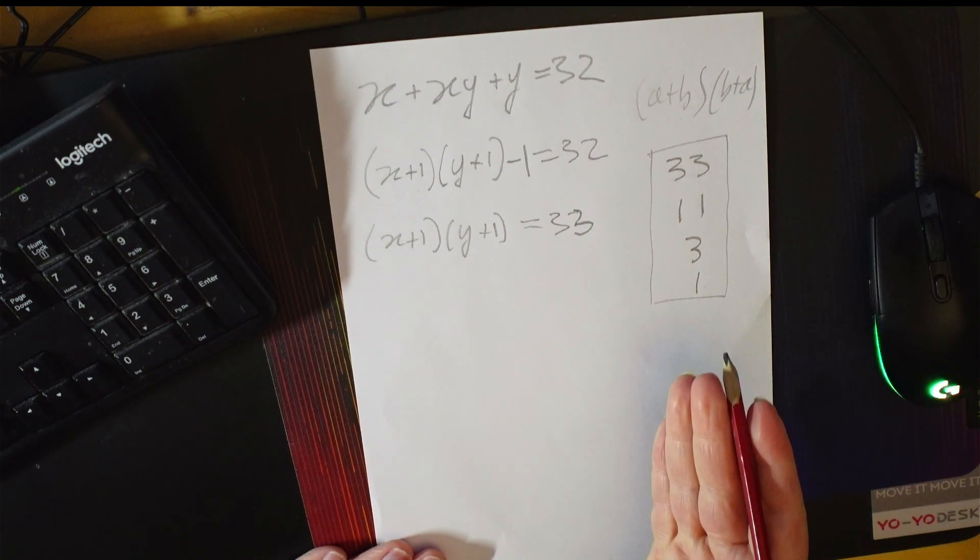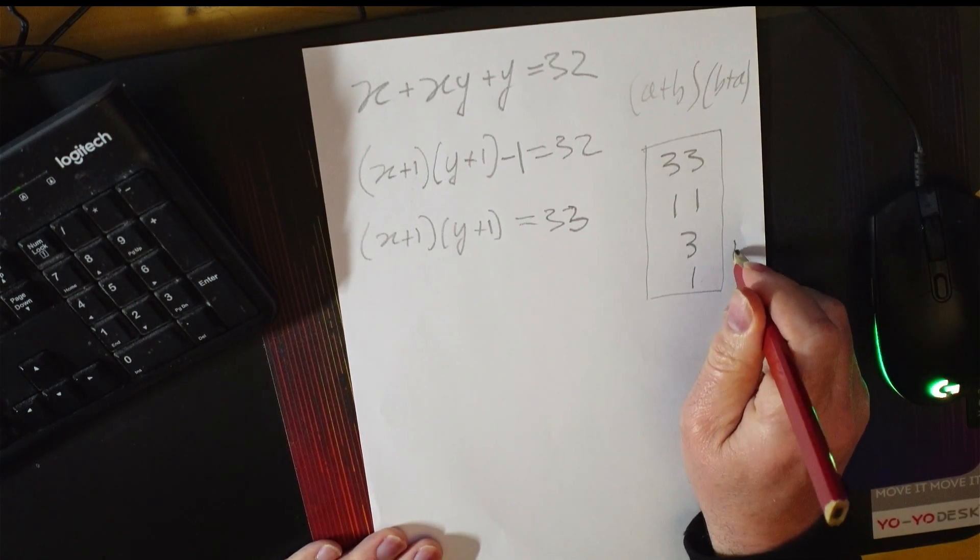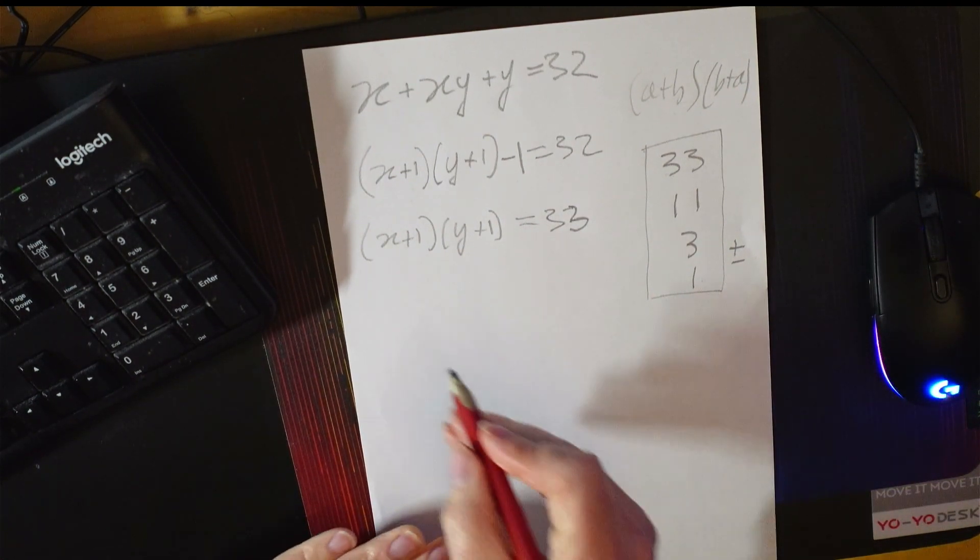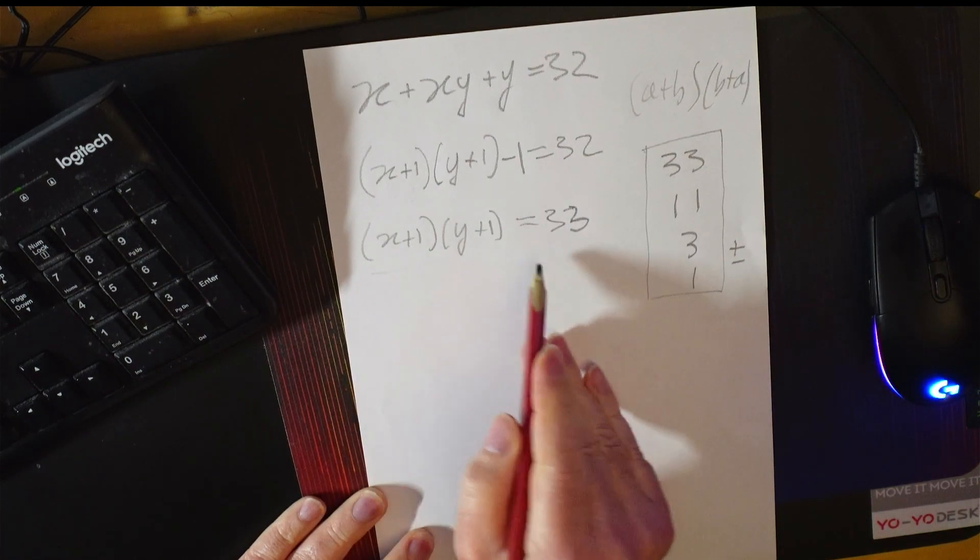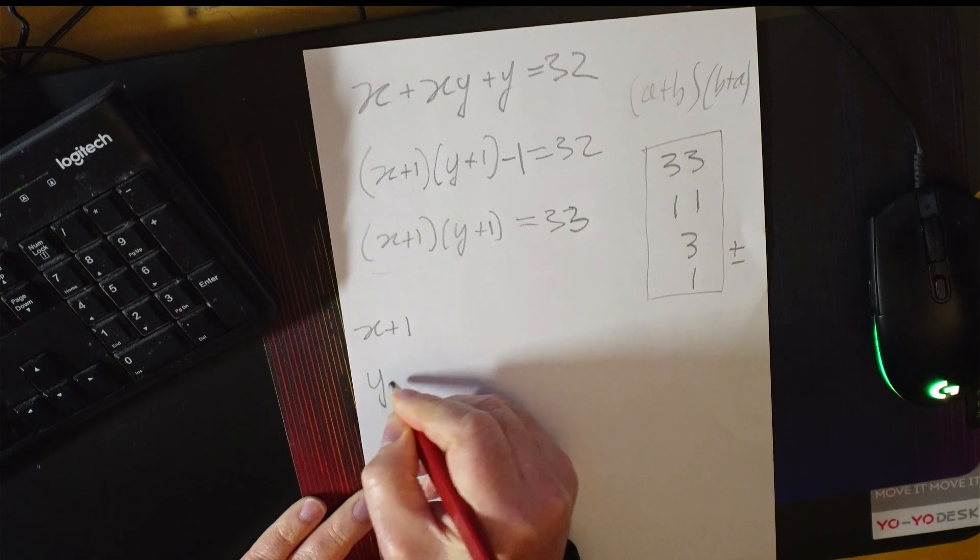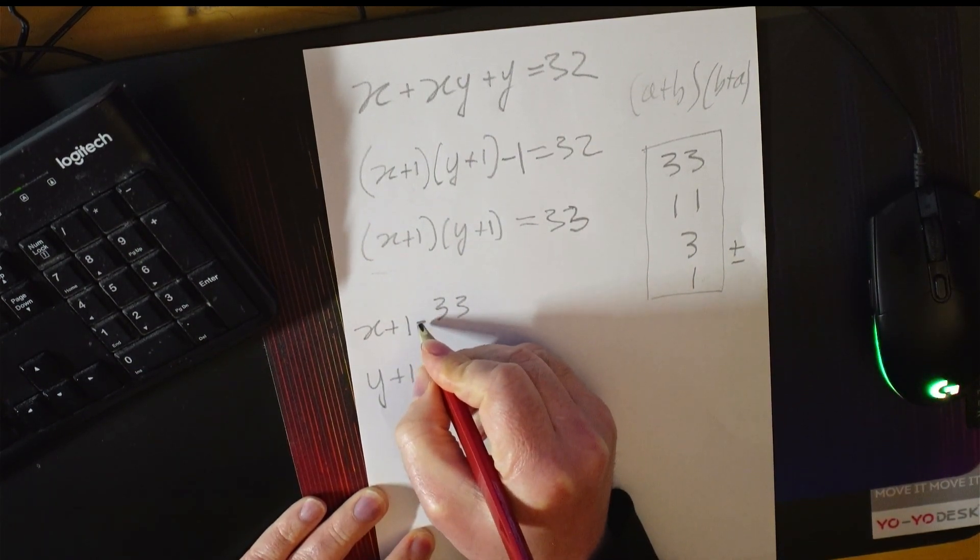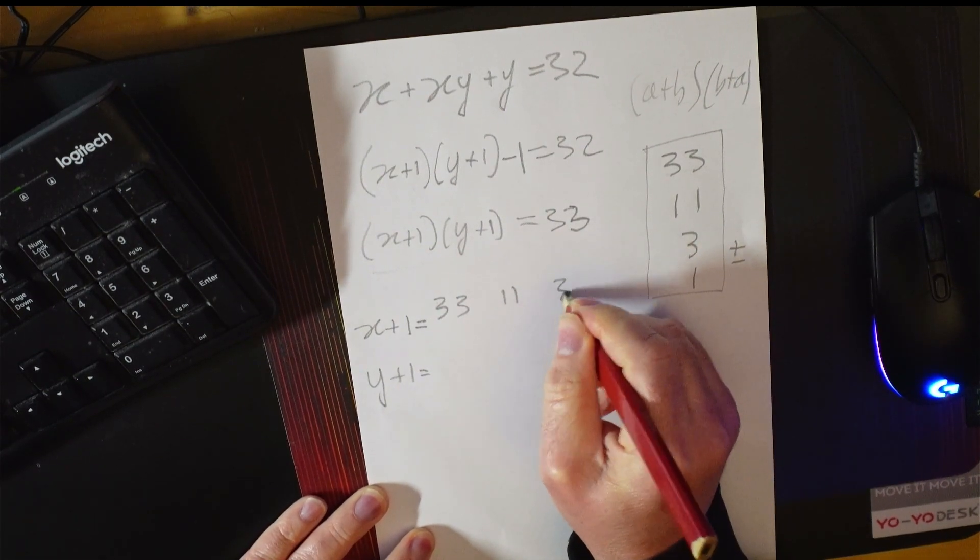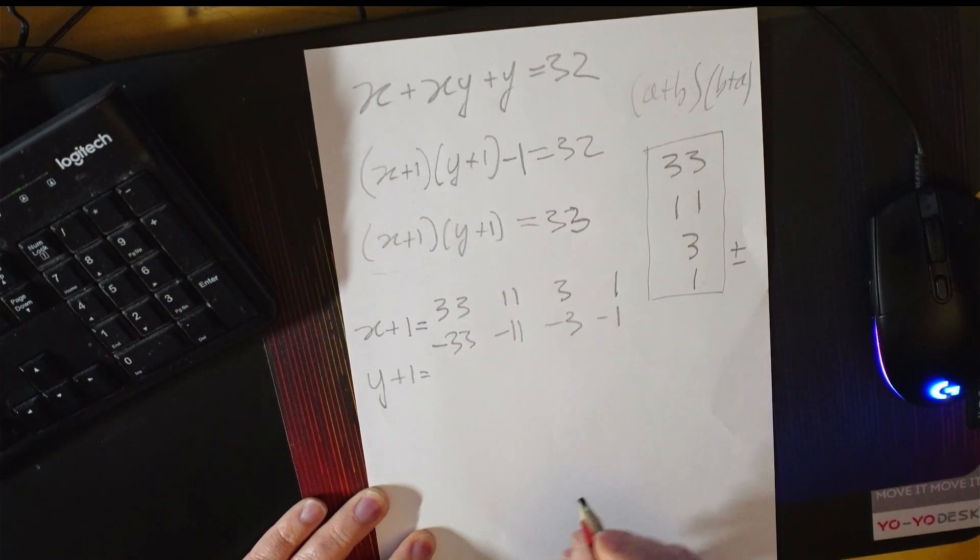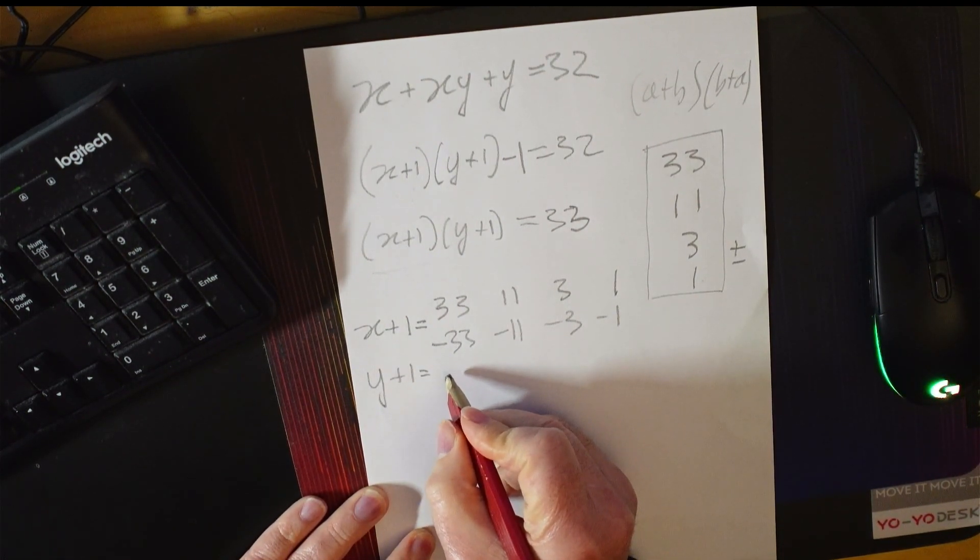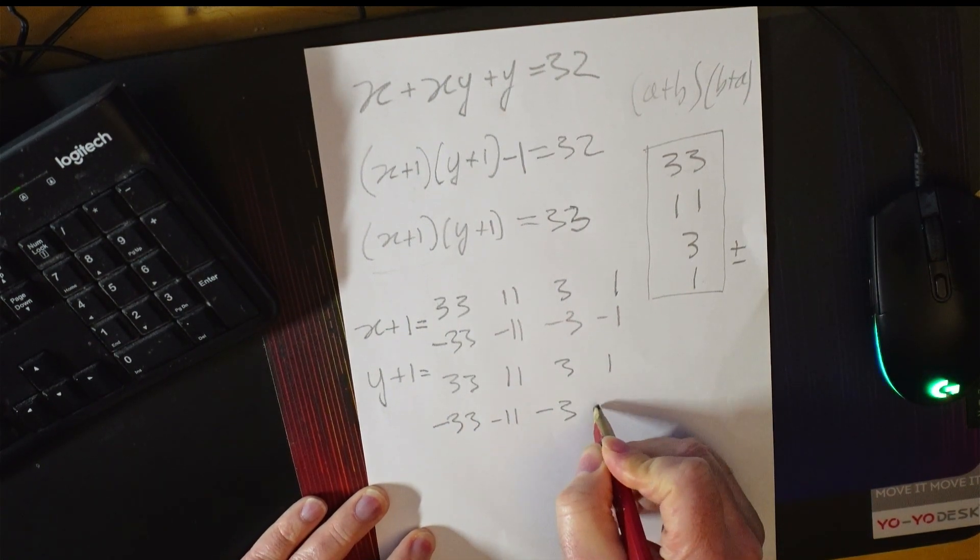This means that the only way that you can get 33 is by multiplying these together. You have to remember that there's also the negative side of this. So what we're looking for are numbers that we can multiply together so that we get 33, and I'm going to look at x plus 1 and y plus 1. They've got to be some kind of combination of these values. So we have 33 equals 33 or 11 or 3 or 1 or minus 33 or minus 11 or minus 3 or minus 1. And it's the same thing for the other one. Also 33, 11, 3, 1, minus 33, minus 11, minus 3 and minus 1.